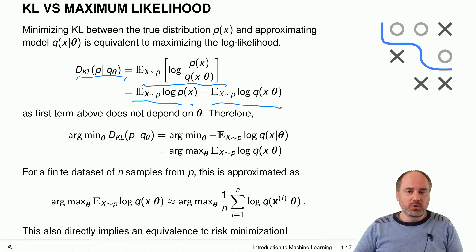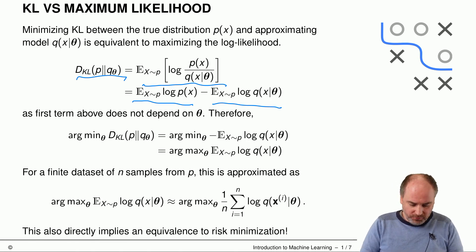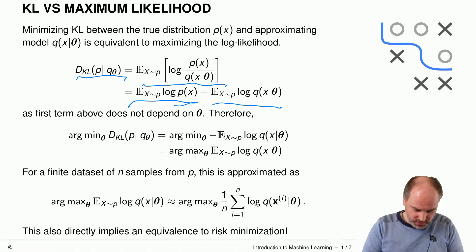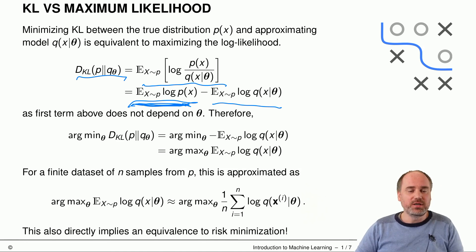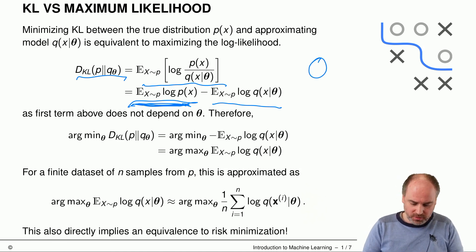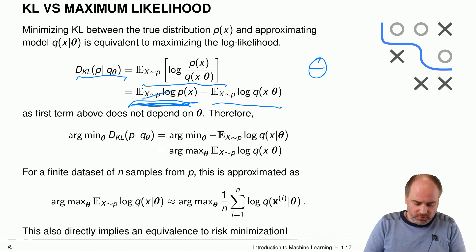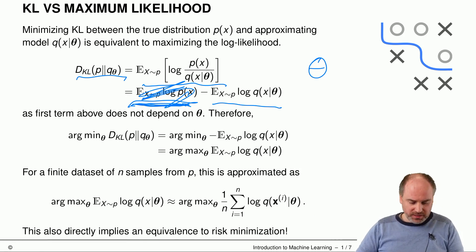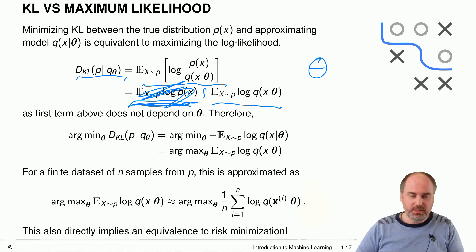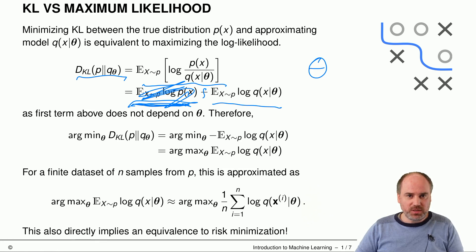Looking more closely, it becomes very apparent that this first term does not depend on our parameter vector theta. So in terms of minimization, if we're just looking for the optimal theta — the optimal parameterization when we approximate p of x by q of x — this whole term does not matter. We can disregard it and instead maximize this positive expectation of log q of x with respect to theta, taken under p of x.